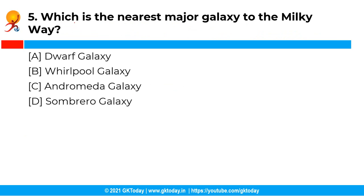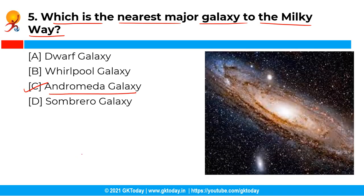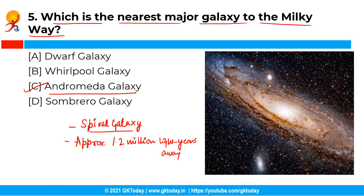The next question: which is the nearest major galaxy to the Milky Way? The correct answer is Option C, i.e. the Andromeda galaxy. The Andromeda galaxy is the nearest major galaxy to the Milky Way and it is a spiral galaxy approximately 1.2 million light years away from the Milky Way galaxy.